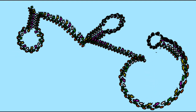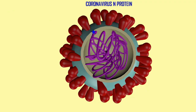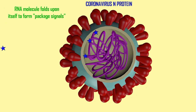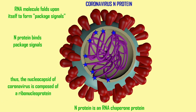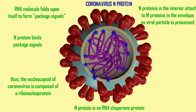In coronavirus, some of these folds form package signals, and one of the main coronavirus proteins — the N protein, or nucleocapsid protein — binds these package signals. Thus, the interior of the coronavirus, the nucleocapsid region, is both RNA plus the N protein bound to it, so it is ribonucleoprotein — both RNA and protein.